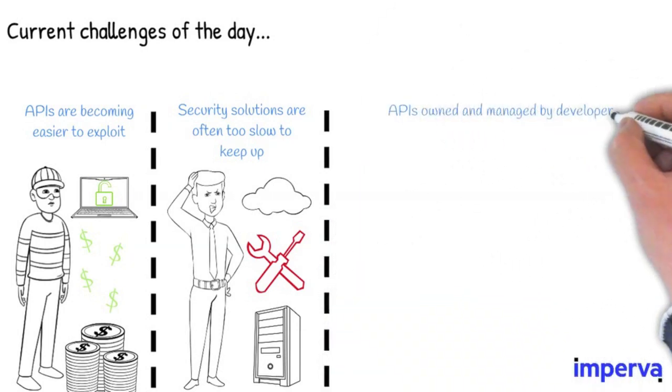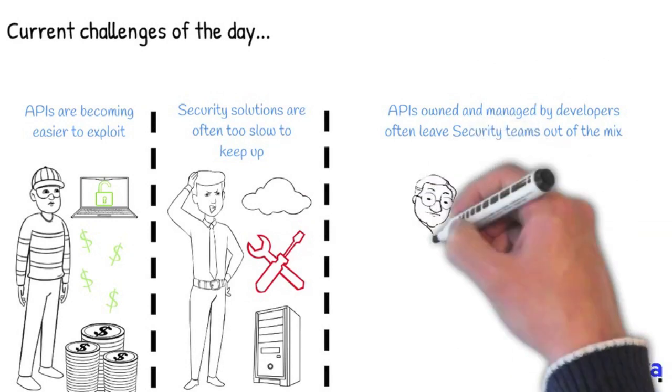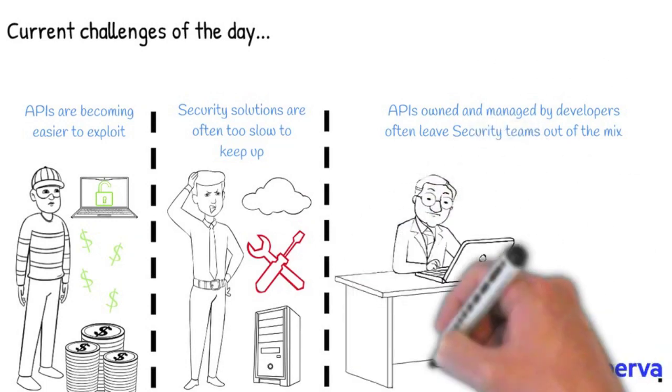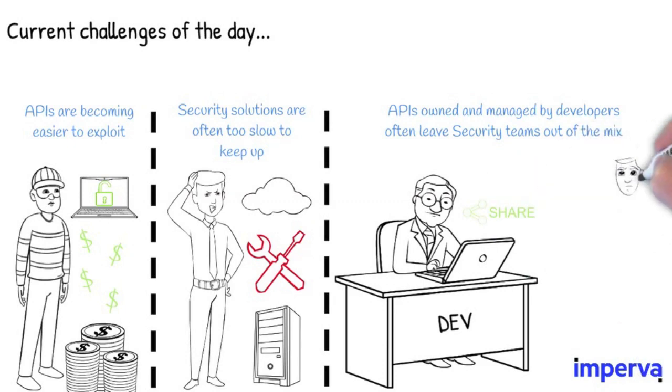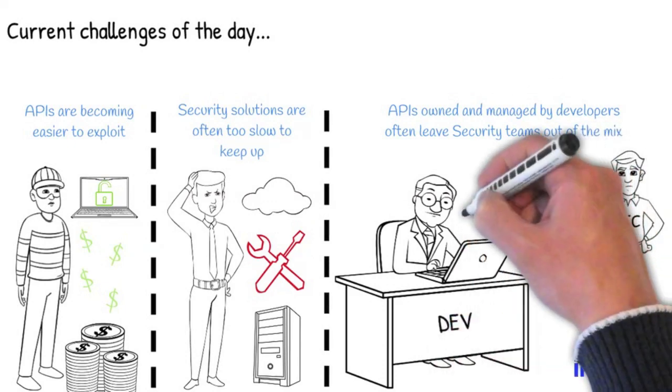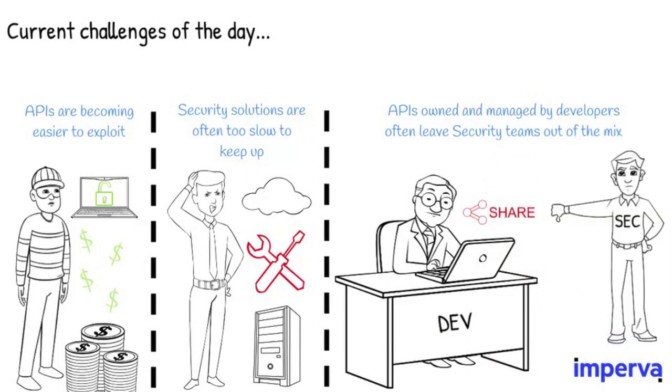And lastly, DevOps want the freedom and flexibility to create APIs that meet their business requirements. In doing so, APIs that are owned and managed by developers often leave security teams out of the mix. Visibility across the board comes into play and a lack thereof can often equal a bottleneck in the process toward publishing.